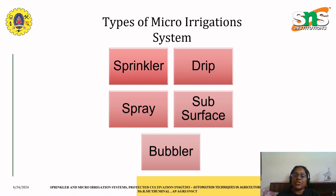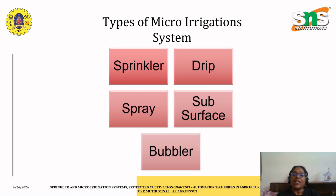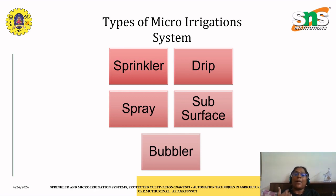Drip irrigation also provides protection against soil erosion and supports water resource management. It is also energy-saving, as it requires lower water pressure compared to sprinkler systems, which helps reduce energy consumption for pumping water. This is why drip irrigation systems are adopted when compared to overhead sprinkler irrigation systems.